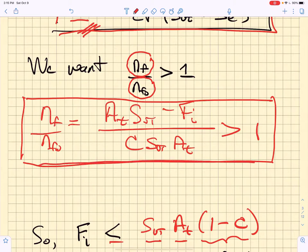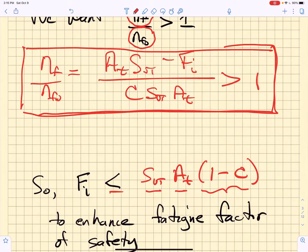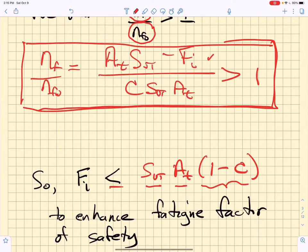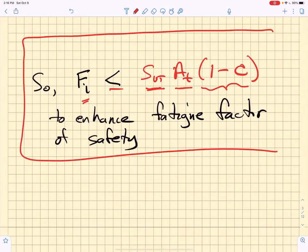That then allows us to solve for this fi, which is our preload, to guarantee that the ratio of the factors of safety are greater than 1. So this tells me that my preload has to be less than this quantity on the right-hand side in order to enhance the fatigue factor of safety. This sets a maximum fi to assure enhancement in the fatigue factor of safety.